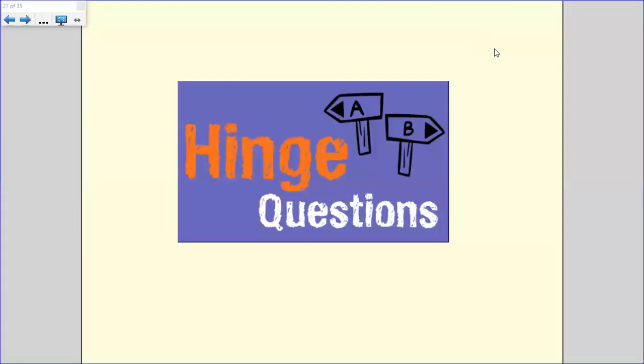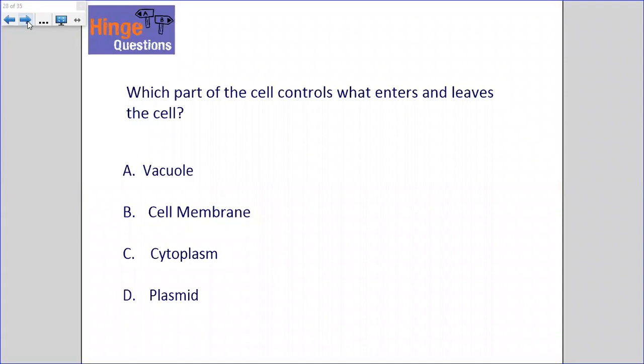OK, so I'm going to give you some questions. Next set of questions. Just get a piece of paper ready. The answer is either going to be A, B, C, or D. Just note down what you think the correct answer is. Which part of the cell controls what enters and leaves the cell? Is it A, the vacuole, B, the cell membrane, C, the cytoplasm, or D, the plasmid?